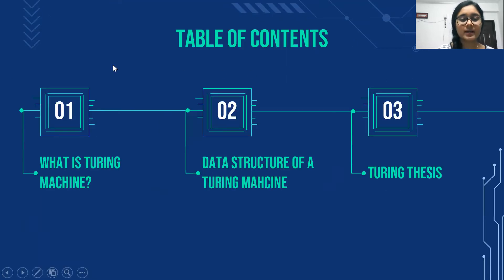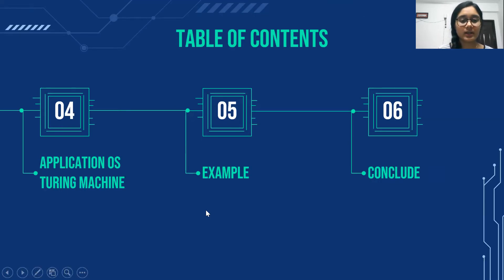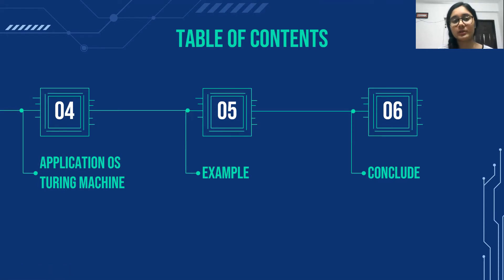The contents I'm going to cover are: firstly, what a Turing machine is; then the data structure of a Turing machine; then something about the Turing thesis; then the applications of Turing machine; the working of Turing machine with the help of an example; and finally, the conclusion.